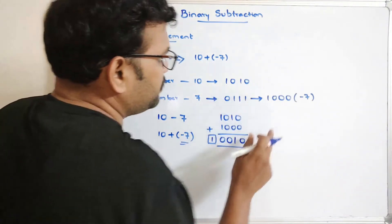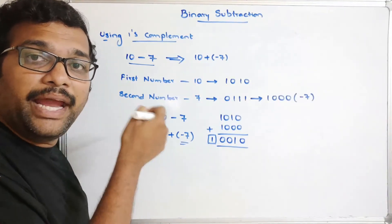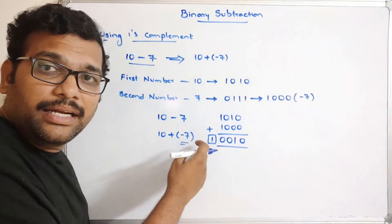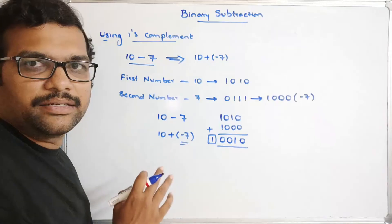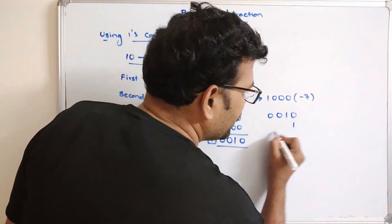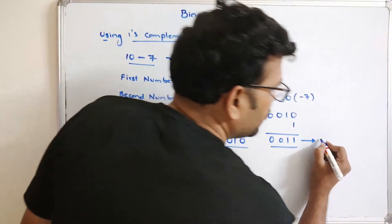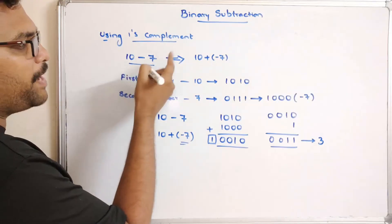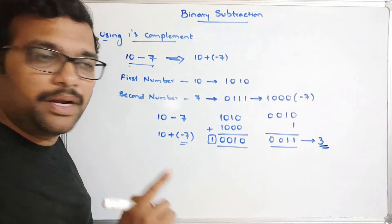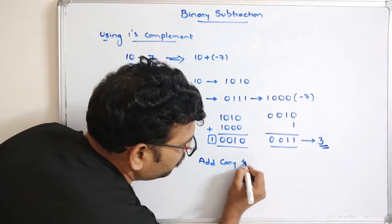The steps are: Step 1, find the binary equivalent of the first number. Step 2, find the negative value of the second number. Step 3, perform the addition between the first number and the negative of the second number. If you get a carry, add that carry to the LSB. So here we have a carry: 0010 plus carry gives 0011, which is 3. The result of 10 minus 7 is 3.